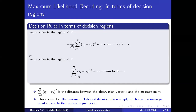Now, writing the decision rule in terms of geometry — if you carefully observe this formula, what does sigma(j=1 to N) of (x_j minus s_{kj})^2 indicate? This indicates the distance between the observation vector and the message point. Geometrically, evaluating this gives you the distance between the received signal point and the transmitted signal point.